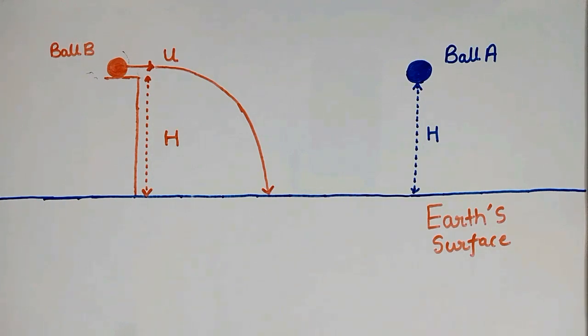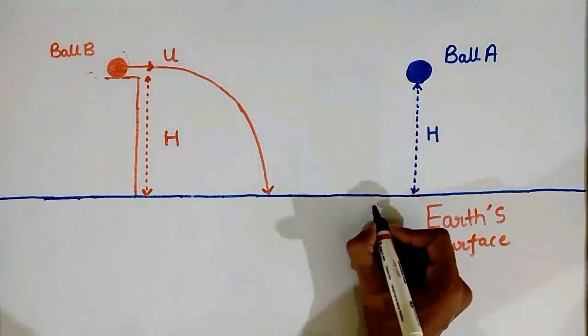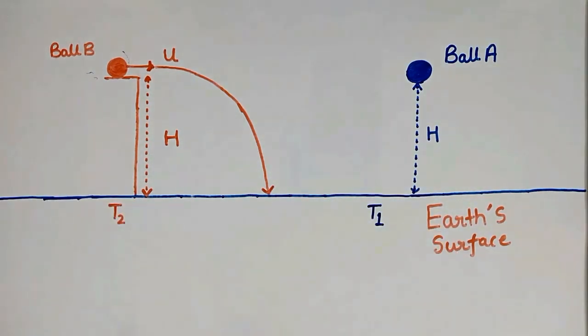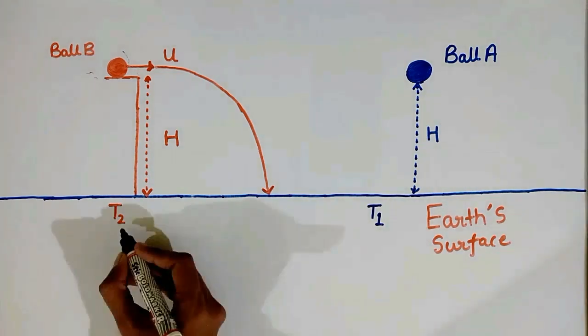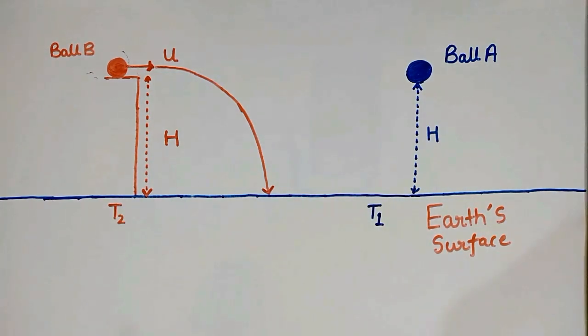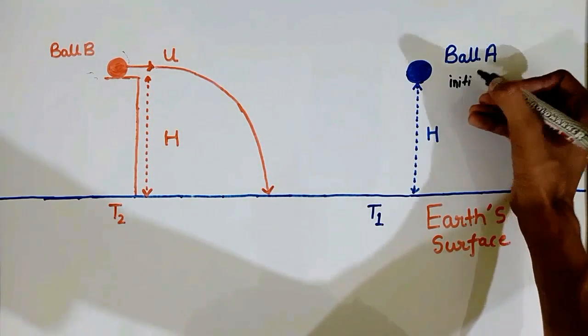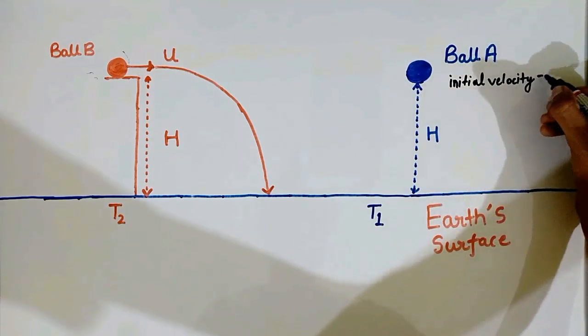Now let us try to solve this using physics. Let T1 and T2 be the time taken by ball A and ball B to touch the earth's surface respectively. Now in this case the initial velocity of ball A is zero.